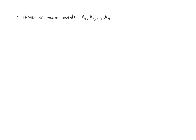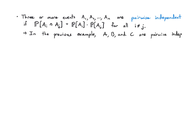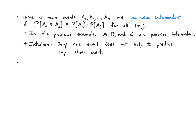Another concept is pairwise independence. Events A1, A2, …, An are pairwise independent if for any pair chosen, the probability of their intersection equals the product of the individual probabilities for that pair. In the previous example, A, B, and C were pairwise independent. The intuition is that any single event does not help predict any other single event, but two or more events together might help you predict a third.